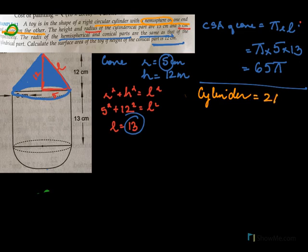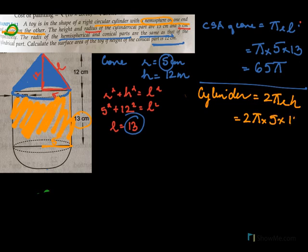Now the CSA of the cylinder = 2πrh. The radius r = 5 and the height h = 13. So CSA of cylinder = 2 × π × 5 × 13 = 130π.